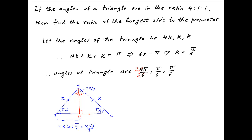Now, since D is the midpoint of BC, therefore CD is equal to BD. Therefore, the length of side BC is equal to 2 times x√3/2, which is equal to x√3.